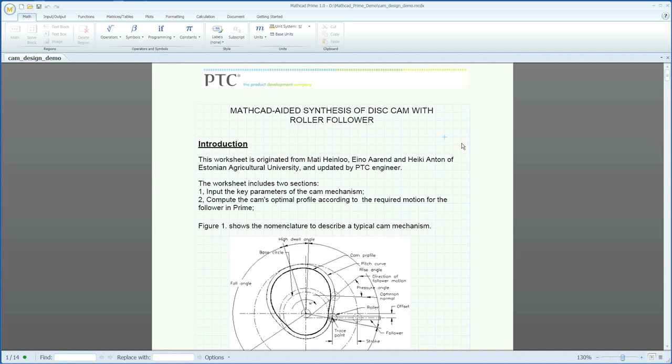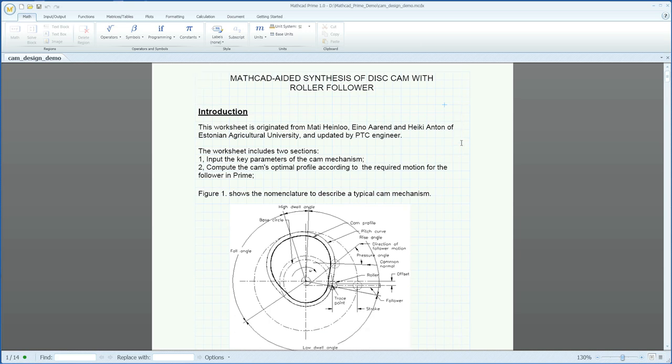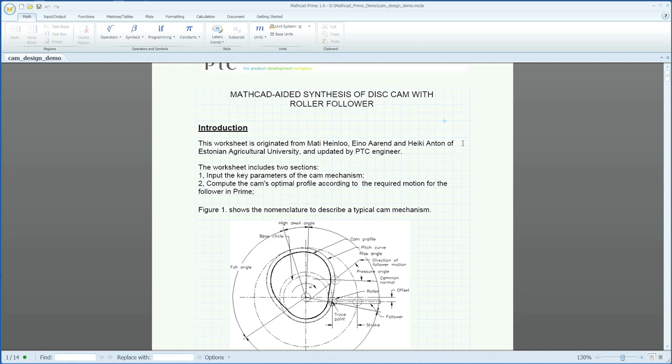MathCAD Prime 1.0 has been redesigned to enable engineers to focus on their engineering calculations while automatically creating a live design document. The graph paper environment helps convey this, alleviating the reformatting of typical engineering scratch pack content for subsequent readability.